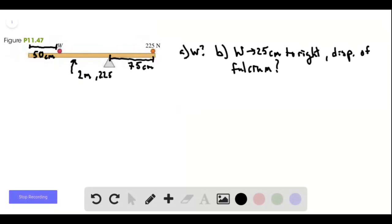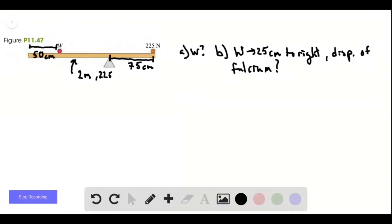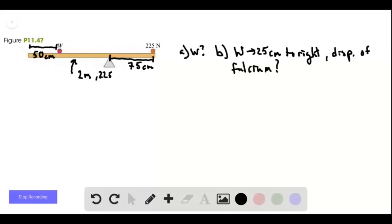Problem 11.47. We have a board or rod, whatever it has, a weight of 200. There's a fulcrum 75 centimeters from one end. We have a 225 newton weight at one end and then 50 centimeters from the other end we have a weight with a value we don't know yet.